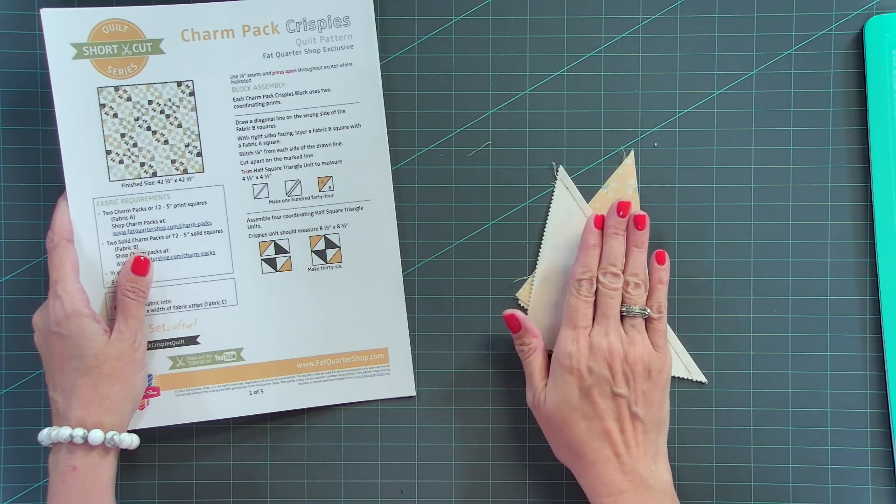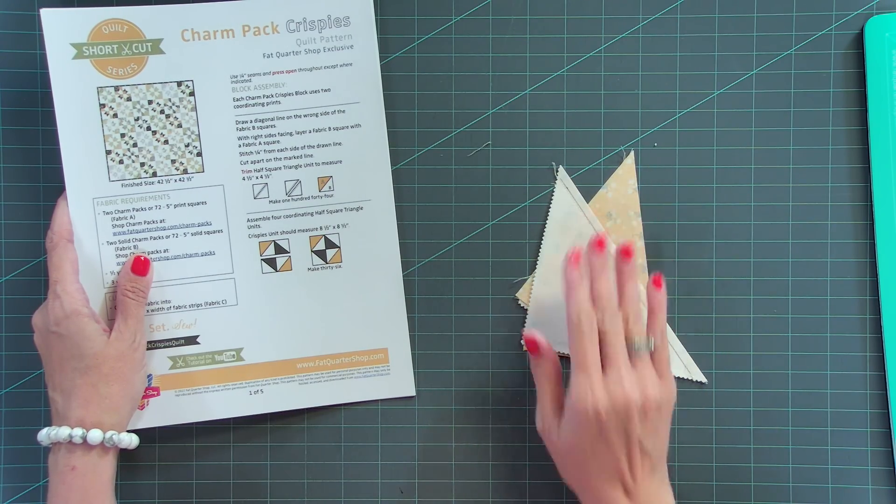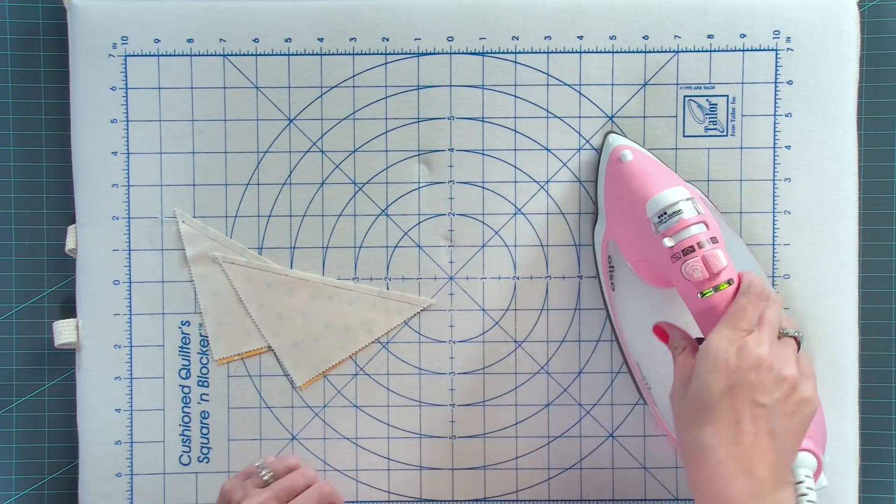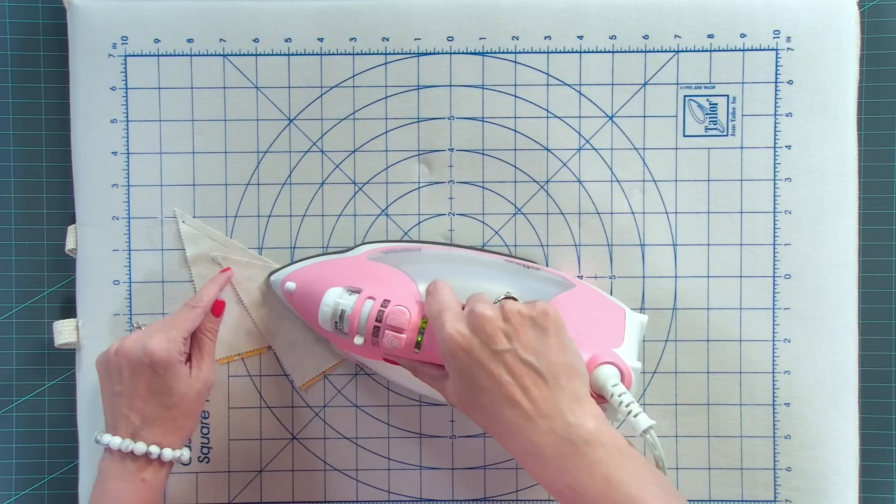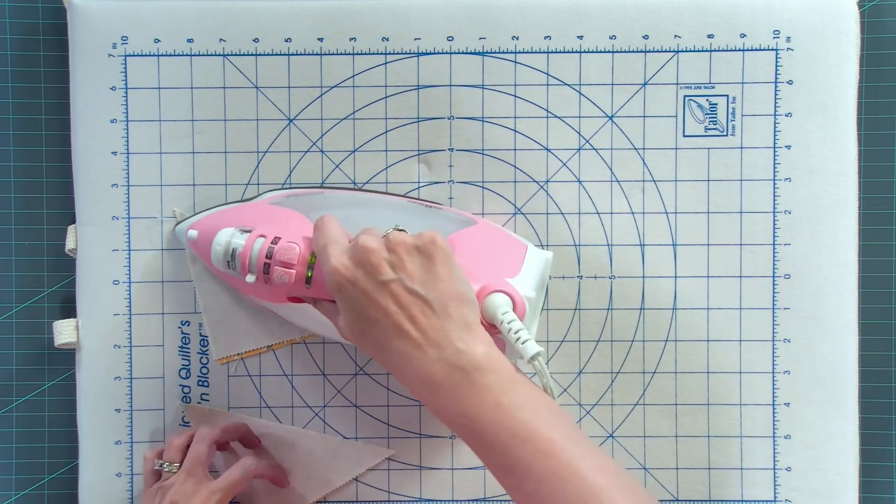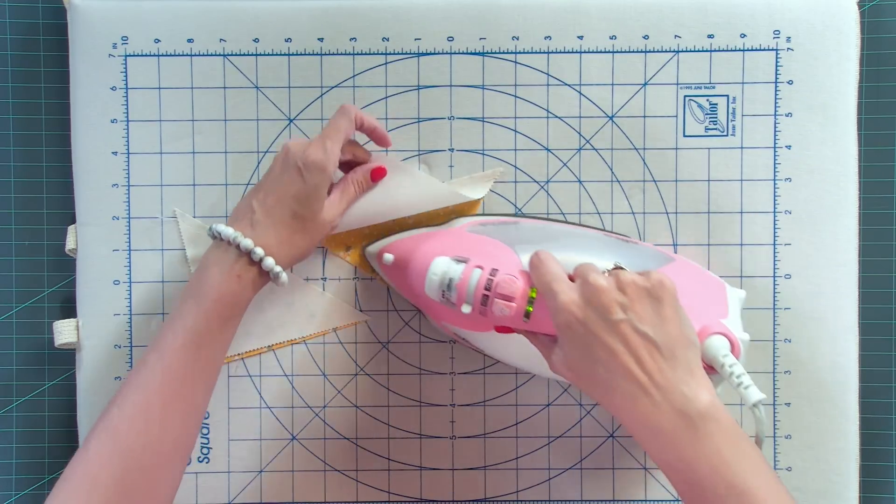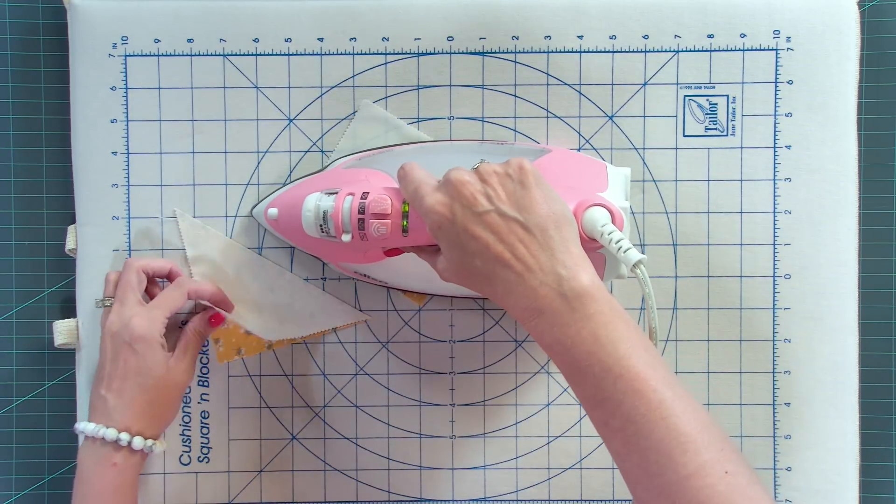Now let me show you how to iron these for the next step. So now what I'm going to do is set my seam. And when you set your seam, that friction pin that I use is going to disappear. And I'm gonna press to one side. It doesn't matter which side.